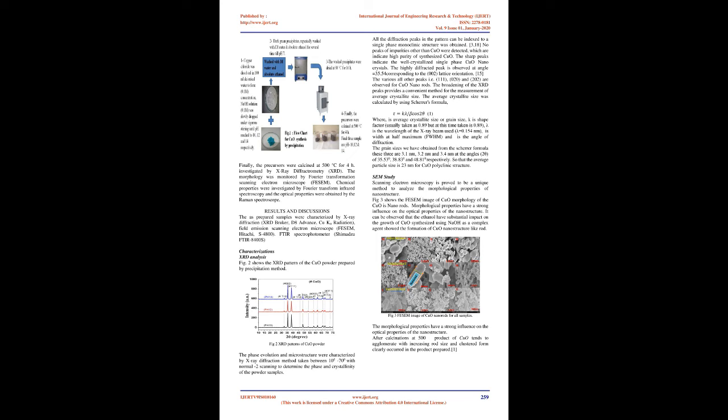Characterizations — XRD Analysis: FIG. 2 shows the XRD pattern of the CuO powder prepared by precipitation method. All the diffraction peaks in the pattern can be indexed to a single-phase monoclinic structure. No peaks of impurities other than CuO were detected, indicating high purity of synthesized CuO. The sharp peaks indicate the well-crystallized single-phase CuO nanocrystals. The highly diffracted peak is observed at angle 2θ = 35.54°, corresponding to the (002) lattice orientation. Various other peaks — (111), (020), and (202) — are observed for CuO nanorods.